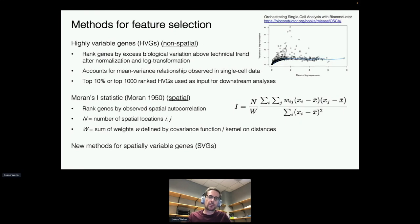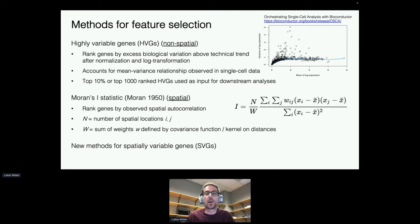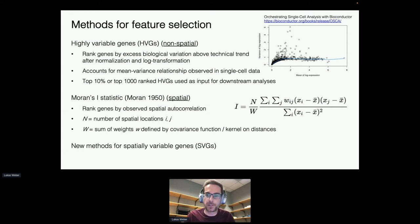Highly variable gene methods for identifying non-spatial informative genes are more standardized now, ranking genes by excess biological variation above a technical trend which accounts for the mean-variance relationship in single-cell data, but that does not take into account spatial information. In spatial statistics there are measures including Moran's I statistic, which can rank genes by observed spatial autocorrelation, but that has not been adapted to the specific properties of spatially resolved transcriptomics data. New methods have been developed to specifically focus on spatially variable genes.